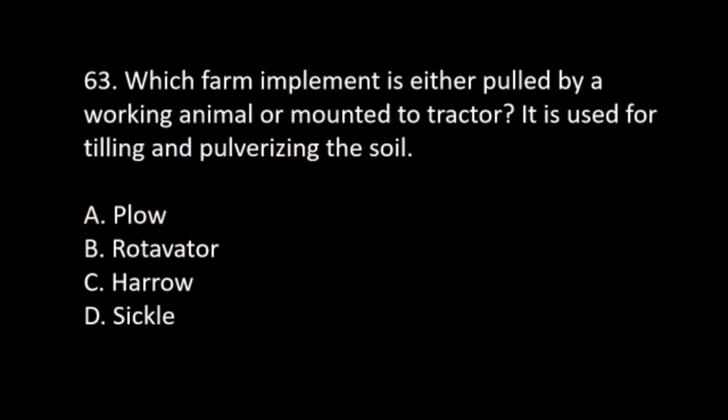Number 63. Which farm implement is either pulled by a working animal or mounted to a tractor? It is used for tilling and pulverizing the soil. A. Plow. B. Rotavator. C. Harrow.